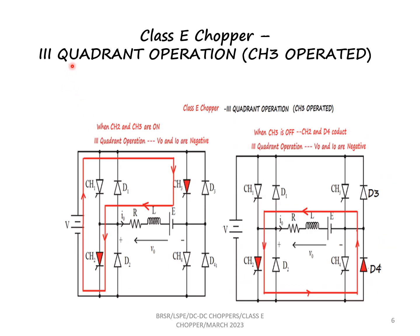Let us now see the operation of the class E chopper in the third quadrant. In the third quadrant, voltage and current are both negative, and CH3 is operated. When switch CH3 is on, the current flows through CH3, load, and CH2 back to the source. When CH3 is off, the current flows through CH2 and D4. In both cases, voltage and current are both negative, explaining the third quadrant operation.